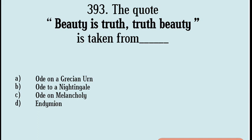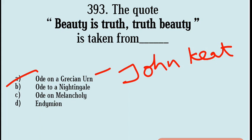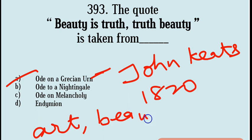Next question: The quote 'Beauty is Truth and Truth Beauty' is taken from which work? Options are Ode on a Grecian Urn, Ode to a Nightingale, Ode on Melancholy, Endymion. Correct answer: Option A, Ode on a Grecian Urn. It is written by John Keats and published 1820. Ode on a Grecian Urn examines the close relationship between art, beauty, and truth.